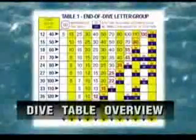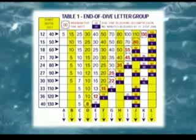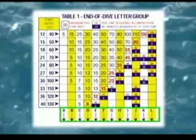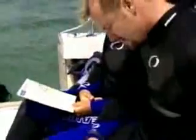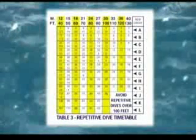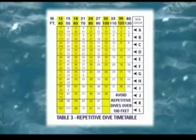The NAUI dive tables use a letter group designation to express the amount of residual nitrogen in your body. The letter A represents the smallest amount, and the amount of nitrogen progresses through to the letter L. When you dive, a letter group from the tables designates the amount of nitrogen you have absorbed. As you spend time at the surface between dives, you are assigned a lower letter group as you off-gas nitrogen. When you start a new dive, your letter group at that time determines the residual nitrogen time, and the tables show you how to subtract this from your normal dive time limits.